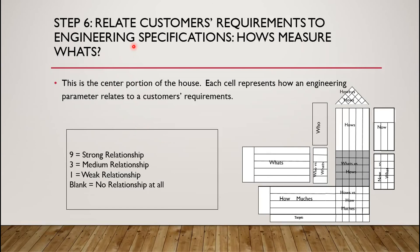Step 6 is to relate customer requirements to engineering specifications. This is the center portion of the house. Each cell represents the strength of the engineering parameter with respect to the customer requirement. A score of 9 indicates a strong relationship, 1 is a weak relationship, and 0 means totally no relationship.